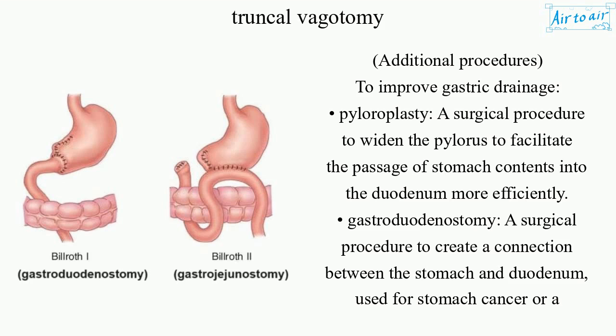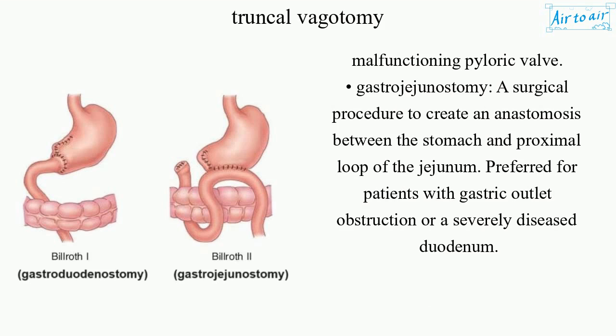Gastroduodenostomy: a surgical procedure to create a connection between the stomach and duodenum, used for stomach cancer or a malfunctioning pyloric valve.